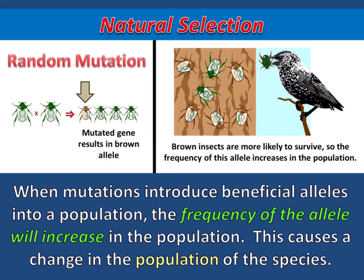In our example, a random mutation created a brown allele in this population. But since this allele makes it easier for the insects to survive, the frequency of that allele increased in this population.